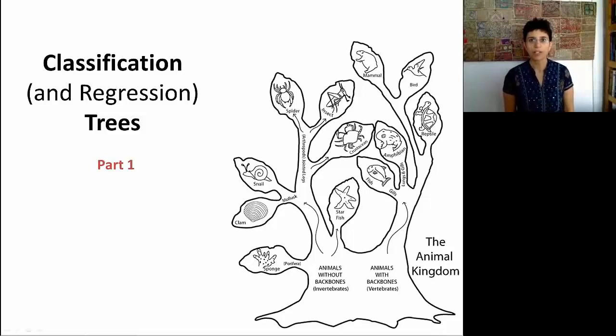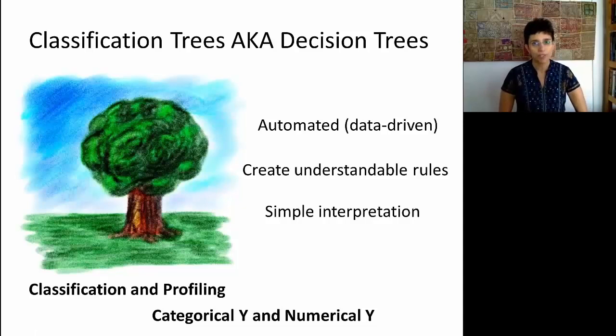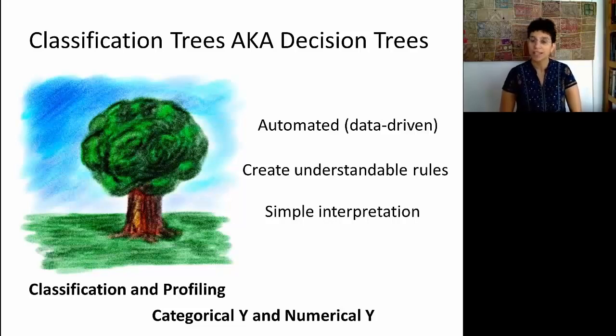In the next sessions, we'll be talking about a classifier called classification and regression trees, also sometimes called CART. Classification trees are sometimes also called decision trees, which is very confusing because the term decision trees is also used to describe a completely different technique that's unrelated to data mining.